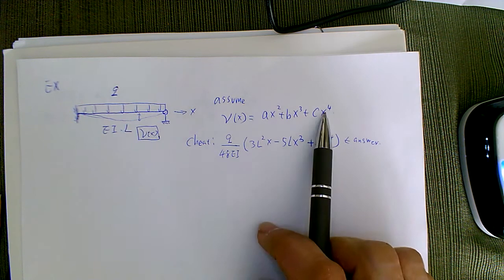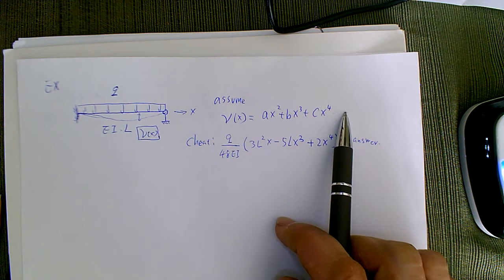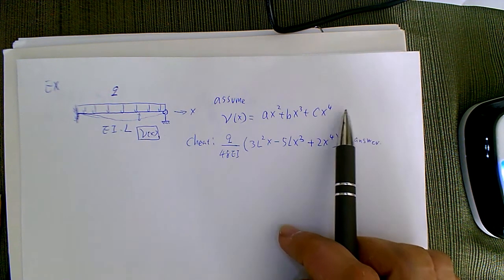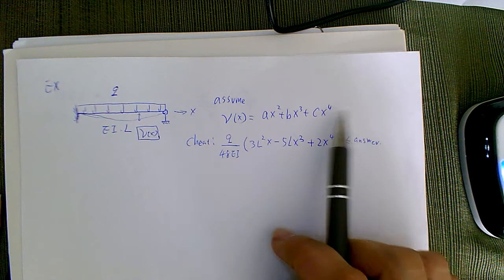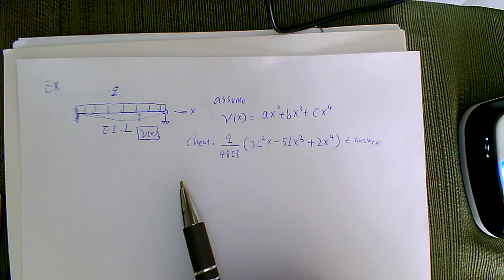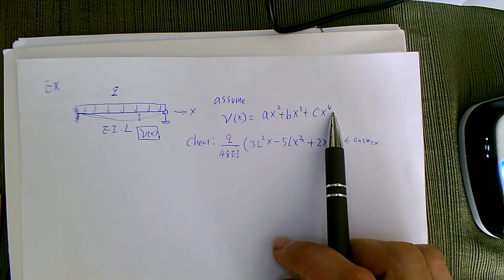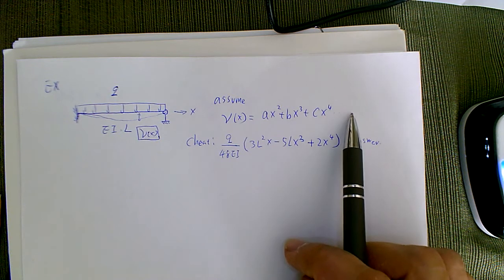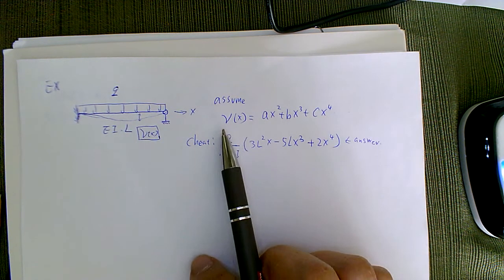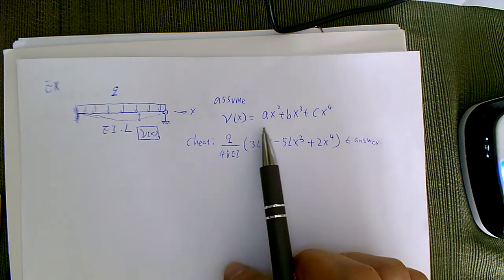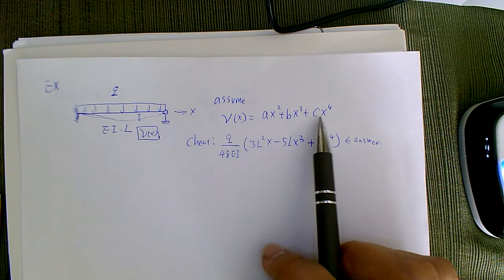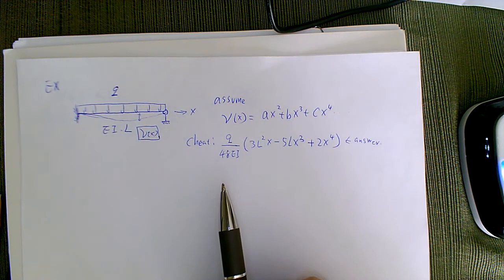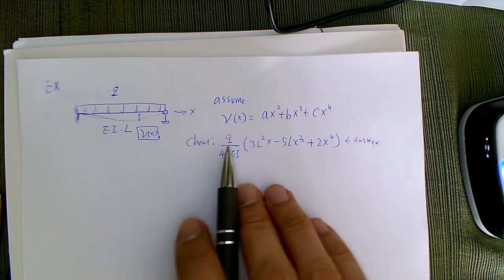If I want to continue to add a Dx⁵ or Ex⁶, it doesn't actually matter because by the end of the day those coefficients will be solved to be zero. You're increasing the number of unknowns, but I'm going to get a virtual displacement with the exact same number of virtual displacement components, so I can always solve those.